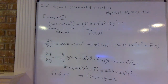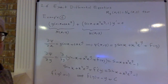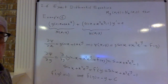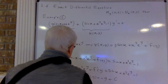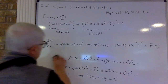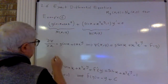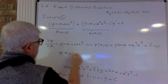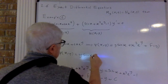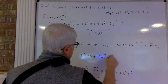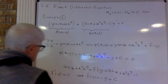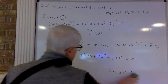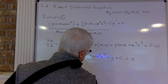So f′(y) = −1 gives me f(y) = −y + C. Substituting back, c(x,y) = y·sin(x) + x²·e^y − y + C, and for different values of C we have different answers.